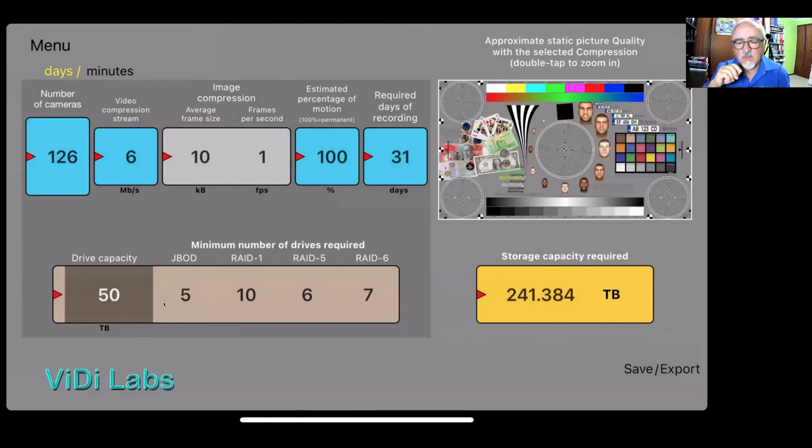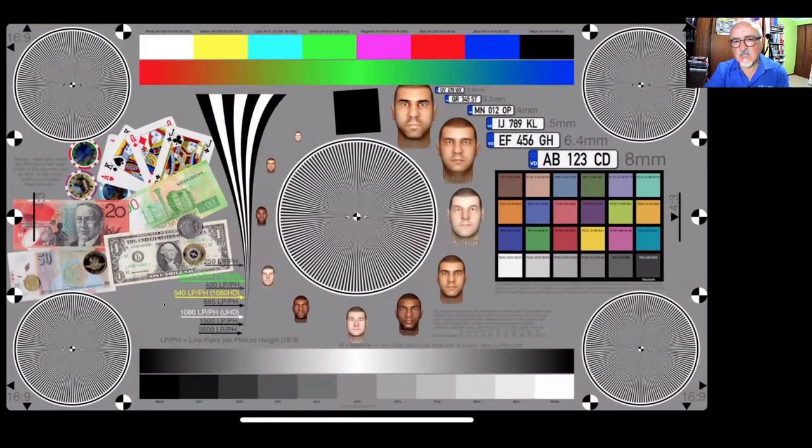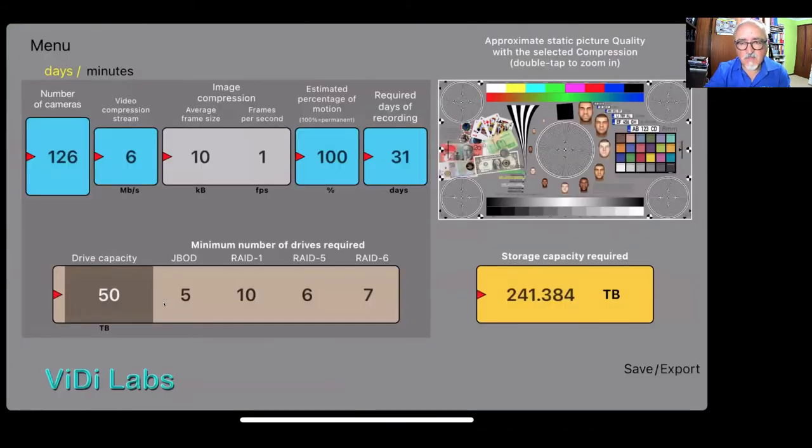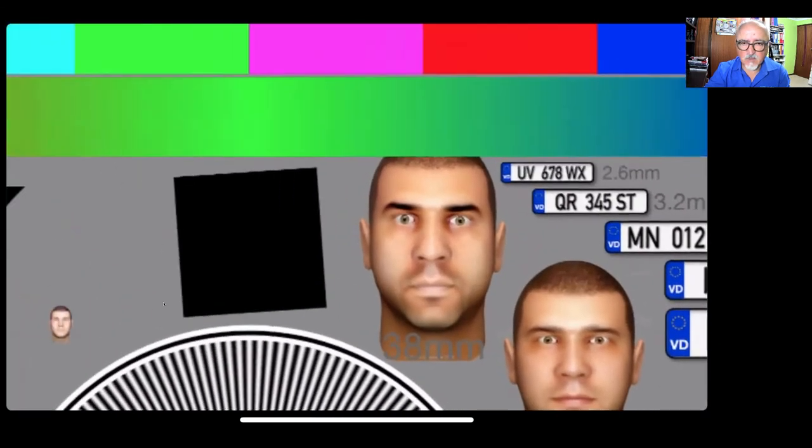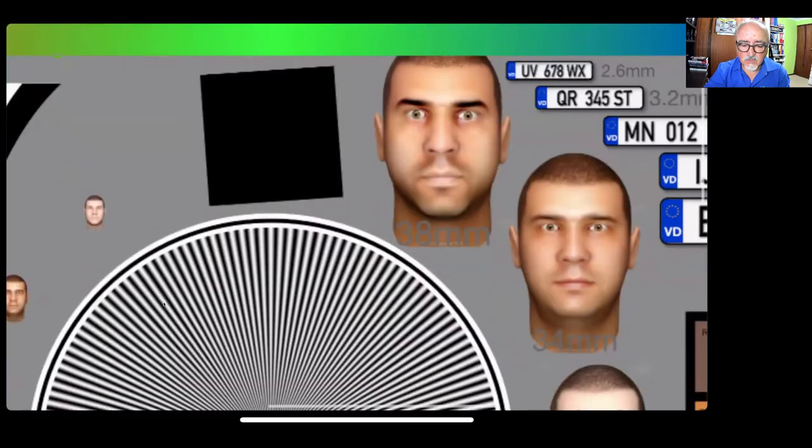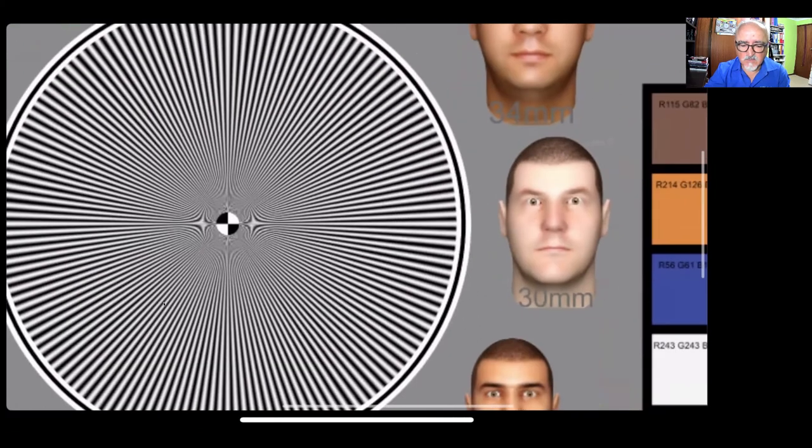Now, another important thing that we brought in here, we've got now our VidiLabs test chart, I should say, that actually gives us simulation of the test chart appearance for the six megabits per second streaming or compression. So as you can see, six megabits looks pretty cool, pretty smooth, which is the purpose of having large megabits per second.